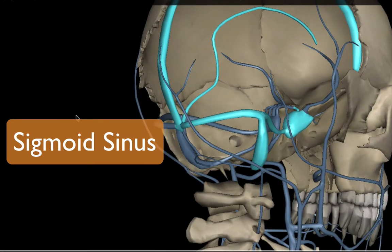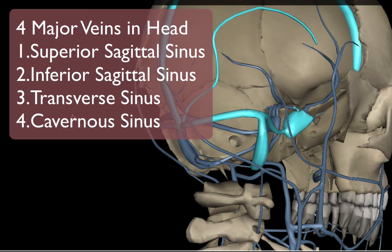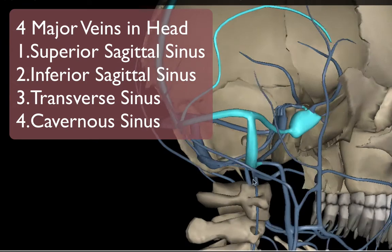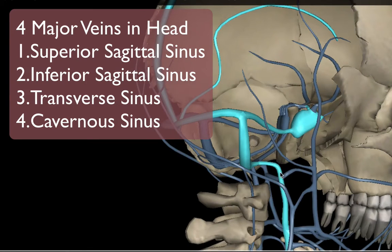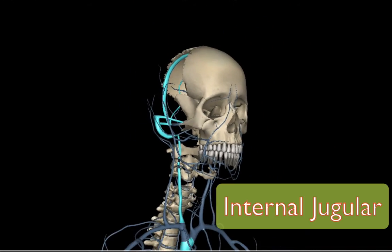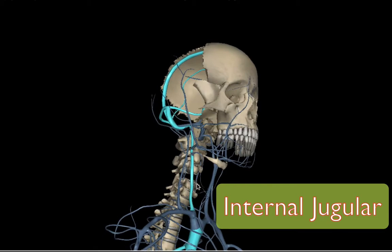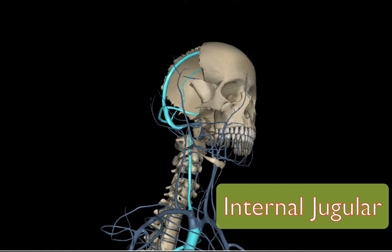All four of these main sinuses — the superior sagittal, inferior sagittal, transverse, and cavernous — meet at the sigmoid and drain into the internal jugular. Let's zoom out so you can get a better perspective of it.